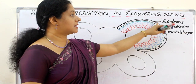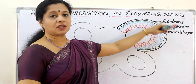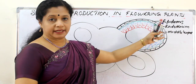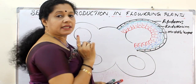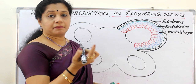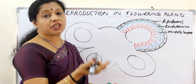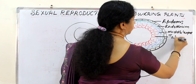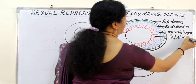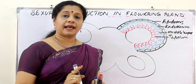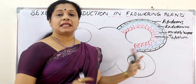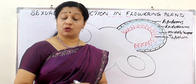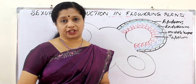The first three layers — epidermis, endothecium, and middle layers — together help in protection and dehiscence, whereas the innermost layer, the tapetum, provides nutrition to the developing pollen grains. Tapetal cells have rich cytoplasm and are mostly in a multinucleate condition.